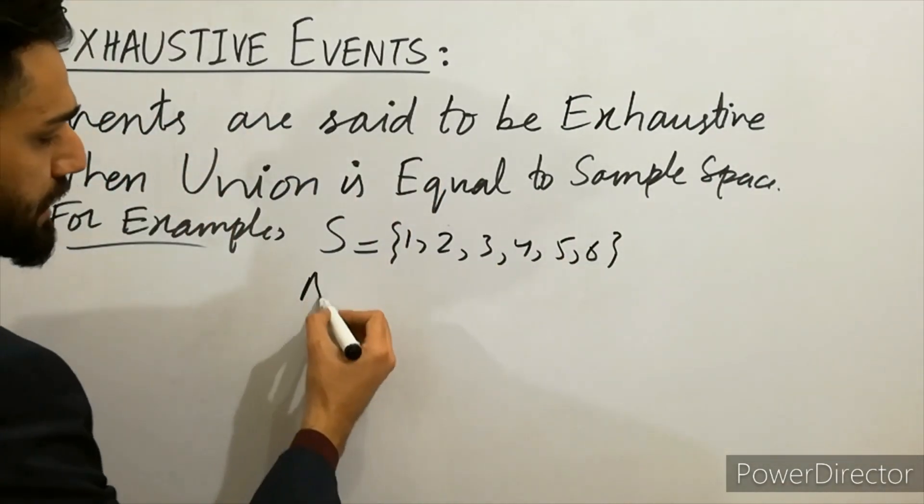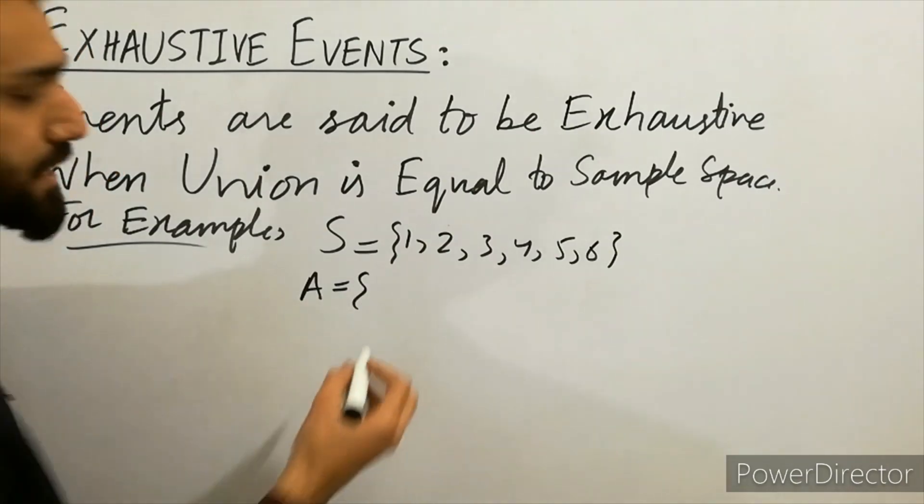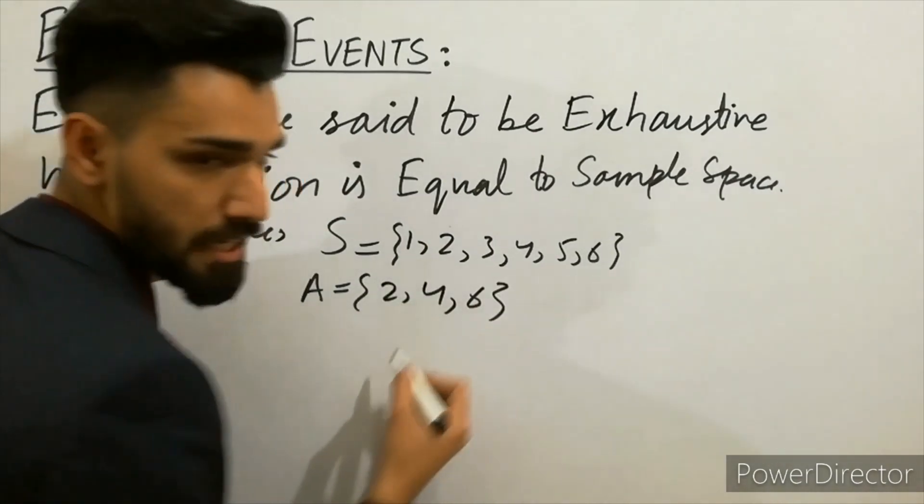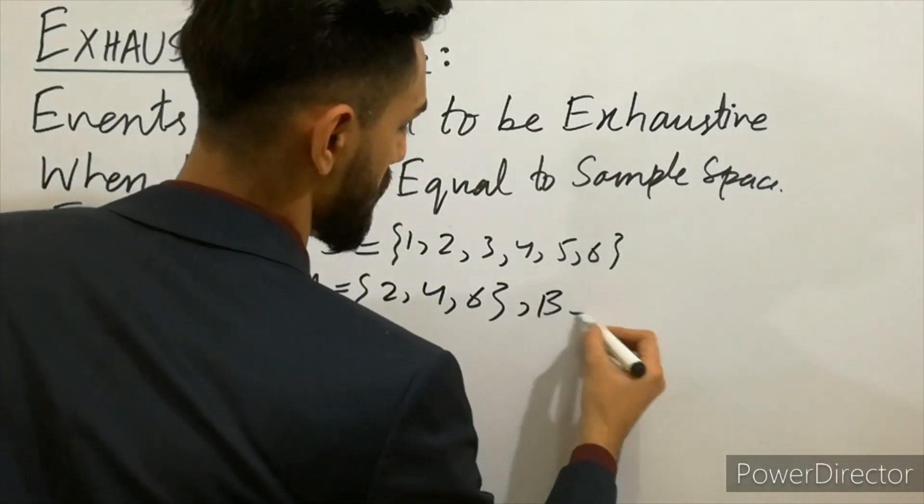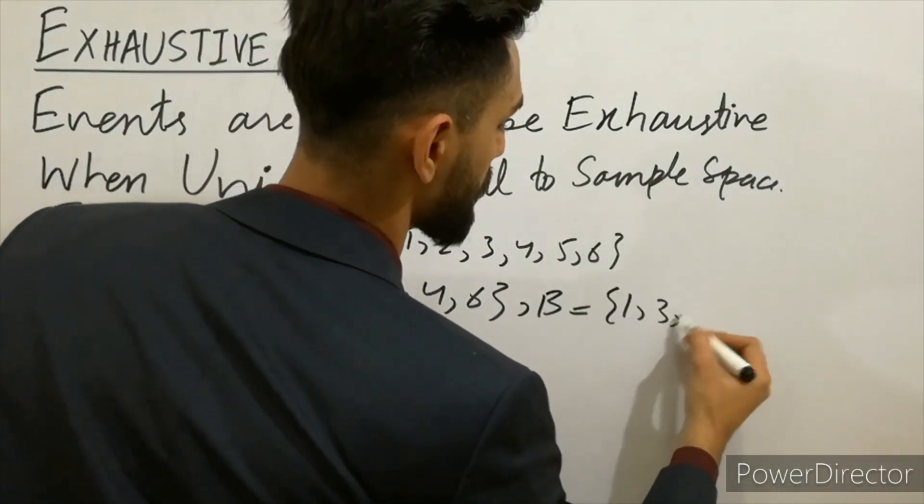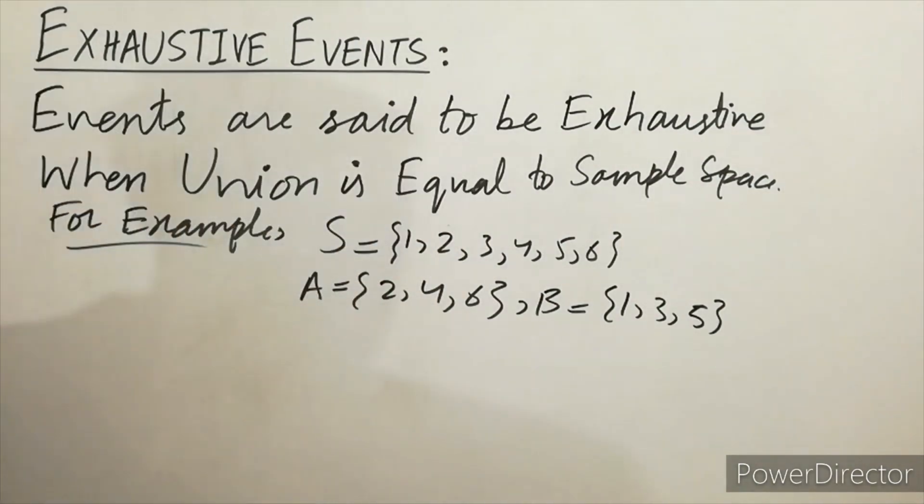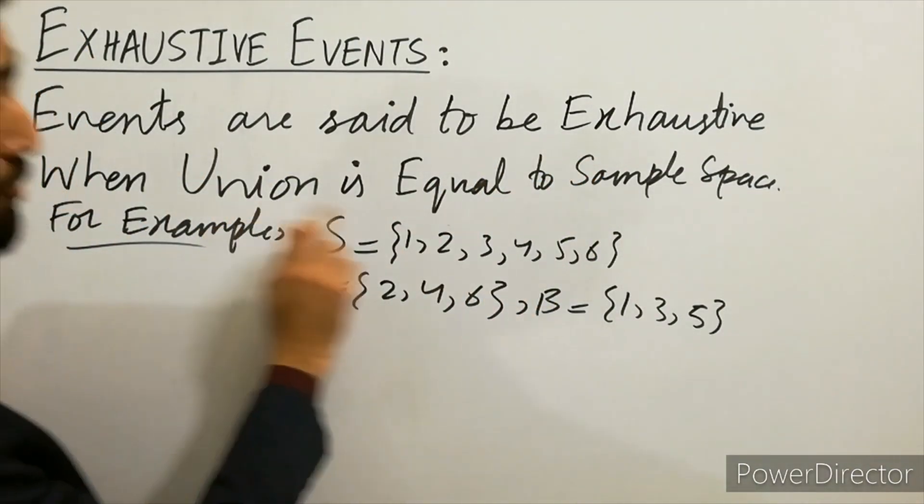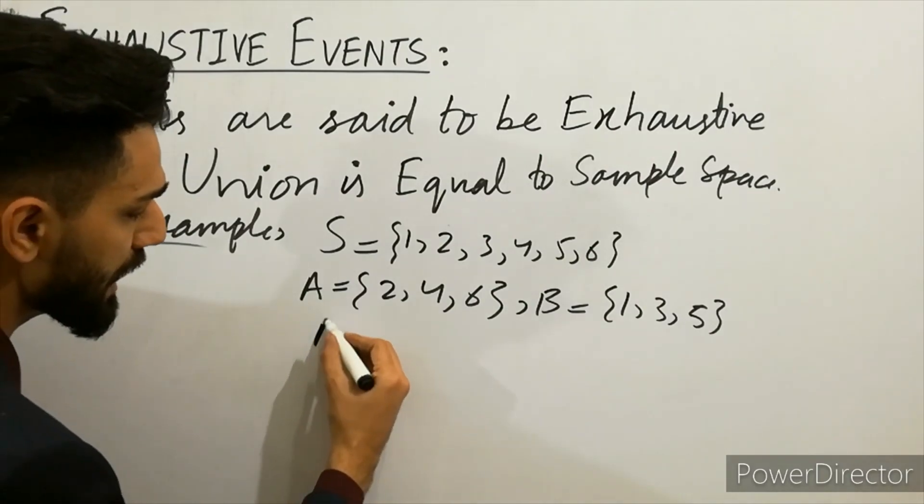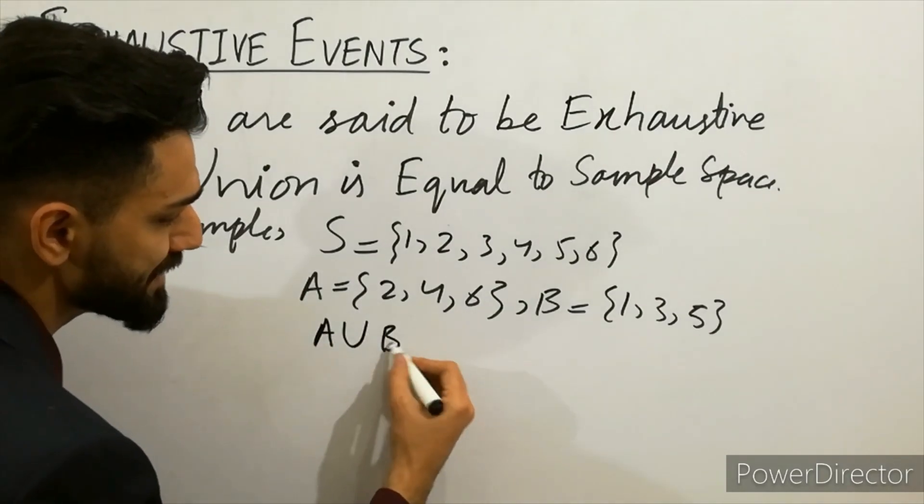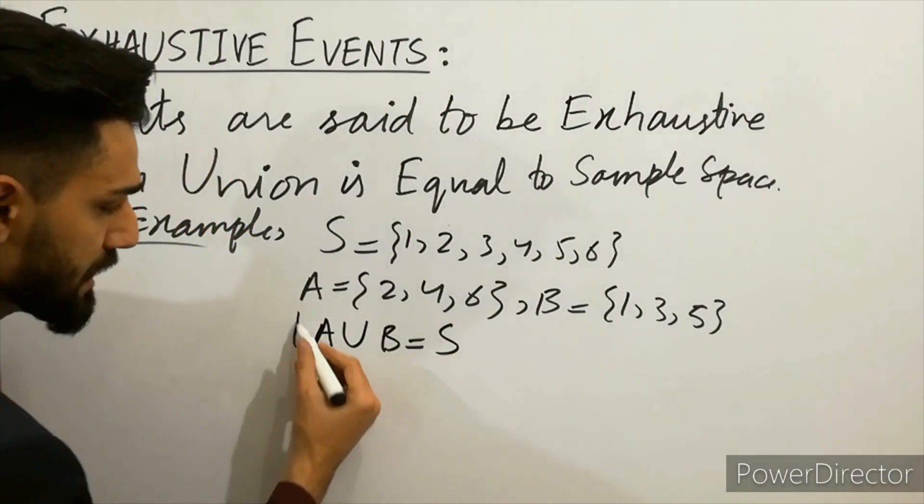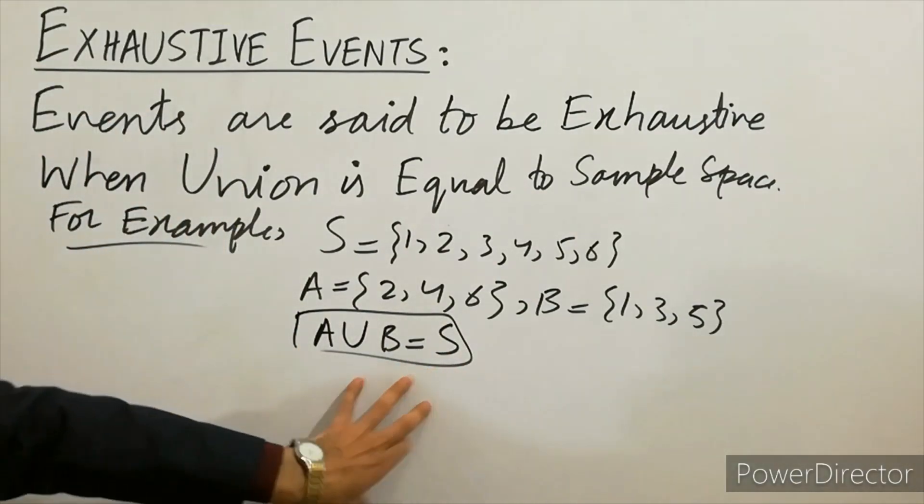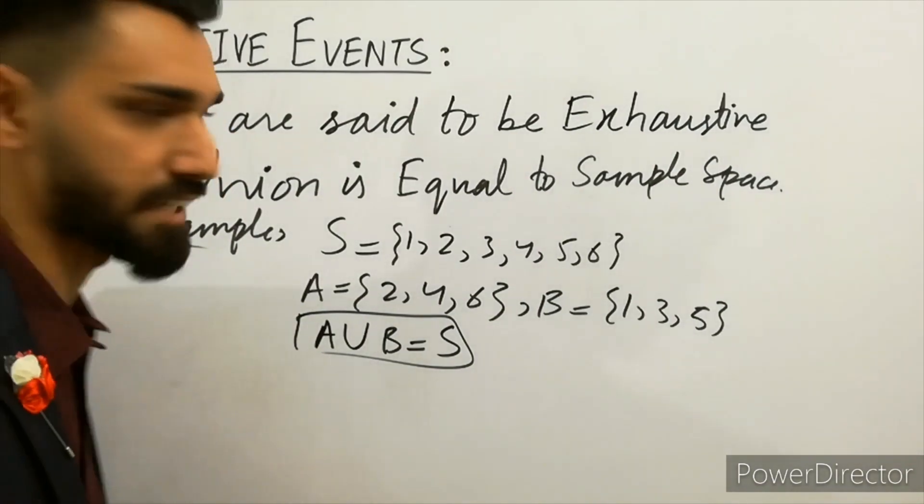Next write here A = {2, 4, 6} and write B = {1, 3, 5}. So when I write out here, events are said to be exhaustive when union A union B is equal to sample space. That's called as exhaustive. How can you prove that?